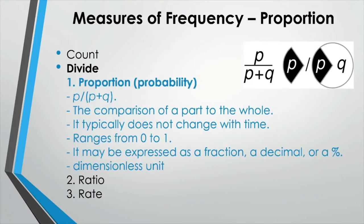After counting is done, sometimes the count is divided by an appropriate denominator depending upon the purpose. So when the count is divided by the total sum, then we have a proportion. In proportion, the part goes to the numerator and the whole goes to the denominator. In other words, the numerator is a subset of the denominator, and proportion does not have dimension because the units in the numerator and denominator are supposed to be the same, and when they are the same, they cancel each other out. Since the numerator is never bigger than the denominator, the value of proportion ranges from 0 to 1.